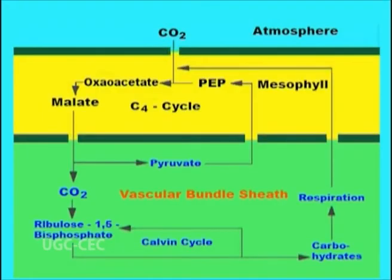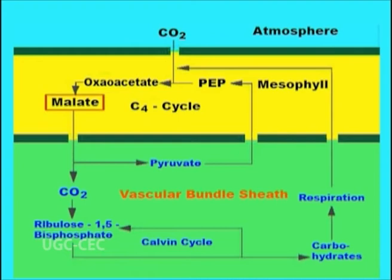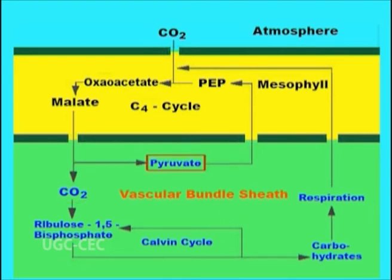C4 plants have their stomata partially closed, and certain cells in the plant have an enzyme that can fix carbon dioxide into 4-carbon compounds, even when oxygen levels are high and carbon dioxide levels are low. PEP carboxylase has no affinity for oxygen. Oxaloacetate is then converted into malate, which is shuttled into the bundle sheath cells.